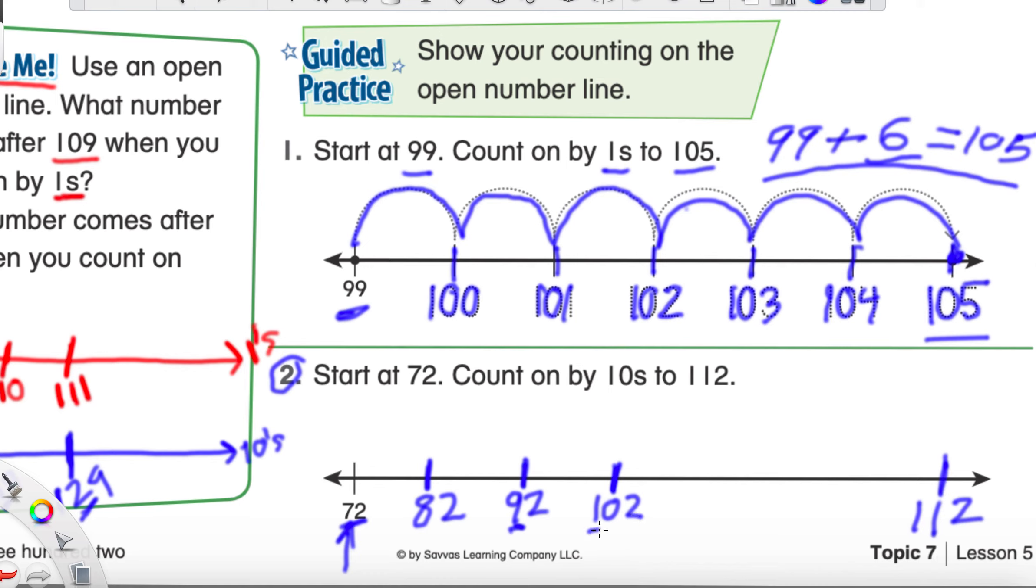Because now we have one in the hundreds, we have zero in the tens, and we have two in the ones. Because all those tens turned into a 100. And now we're just going to look at this tens place again. Remember, we're just focusing on the tens house when we count by tens. What is one more than zero?